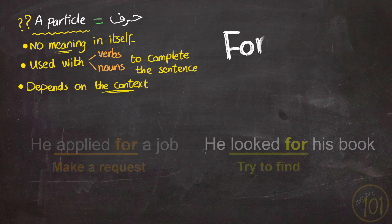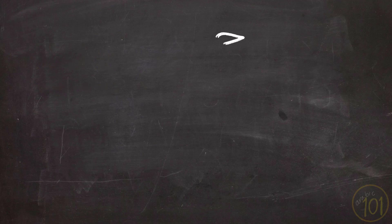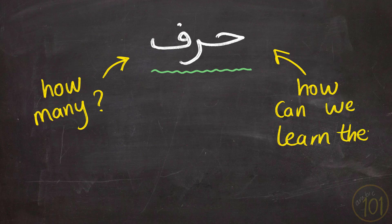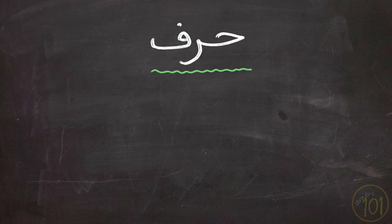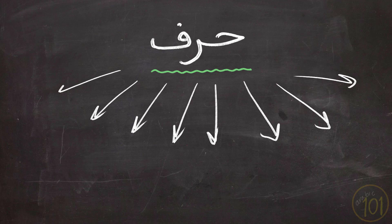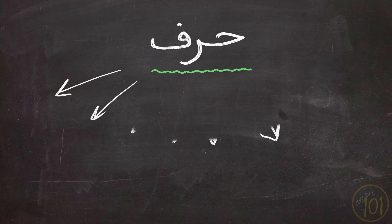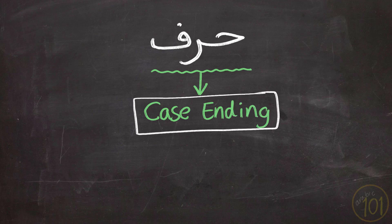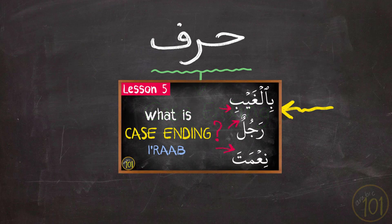How many particles, or huruf, are there in Arabic, and what's the best way to learn them? In Arabic there are dozens of particles, but to make it easier, they can be categorized according to the case ending they inflict on the words coming after them. To understand more about case endings and what they mean, please check out this lesson.